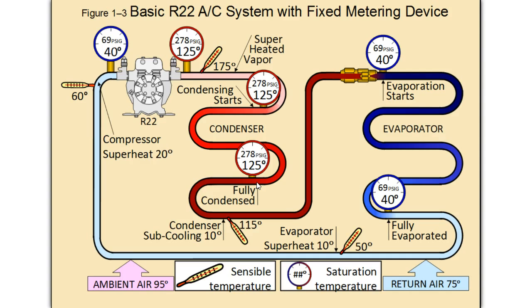At this point it is 100% liquid and cannot change state anymore, and it becomes sub-cooled, so that we have a solid column of liquid entering the metering device. It enters the metering device, which drops the pressure of the refrigerant.